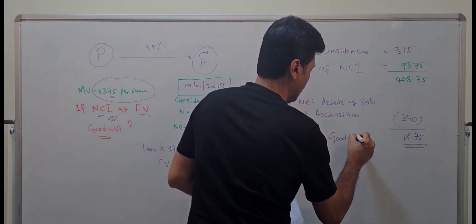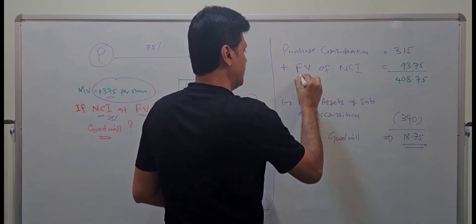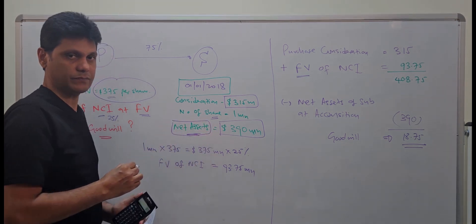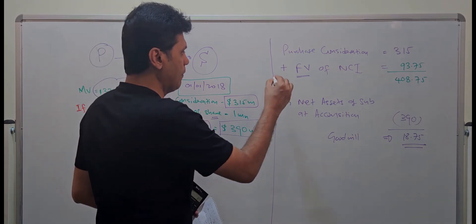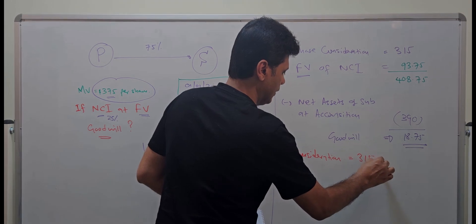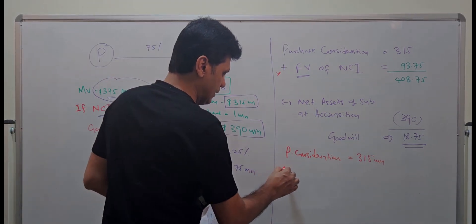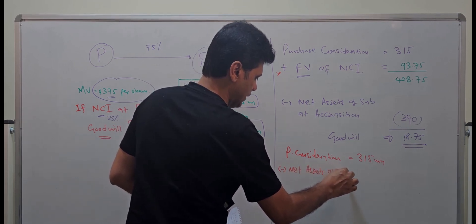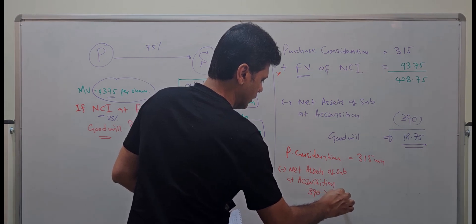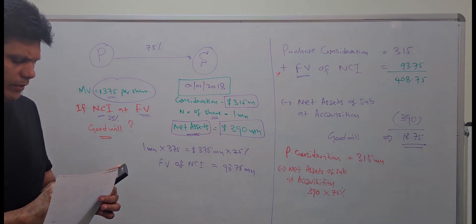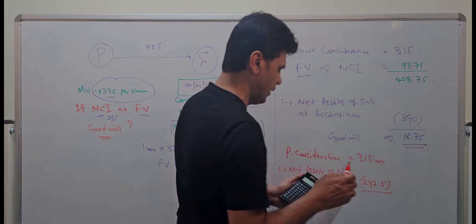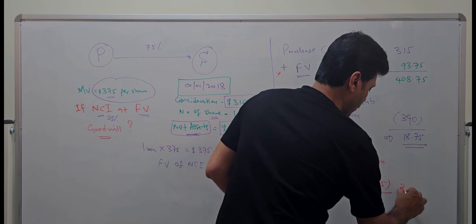So 18.75 million is the goodwill on consolidation when NCI is measured at fair value. Now, if NCI were instead measured at the subsidiary's net assets, the calculation is more straightforward — you don't add back the NCI fair value. The purchase consideration of 350 million less 75% of net assets (390 million × 75% = 292.5 million) gives goodwill of 22.5 million.